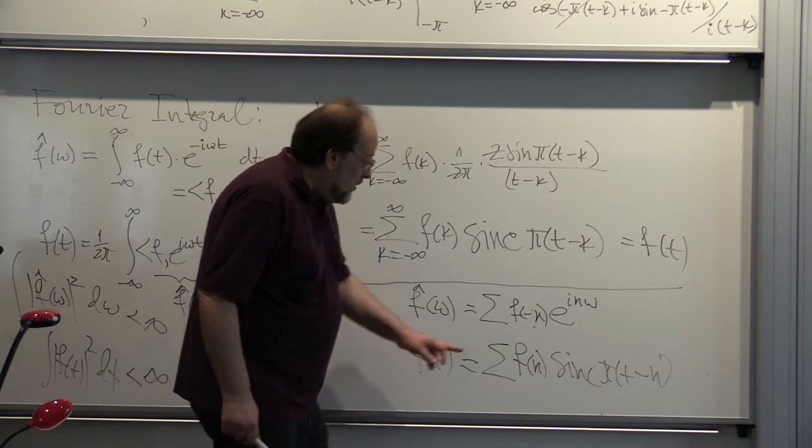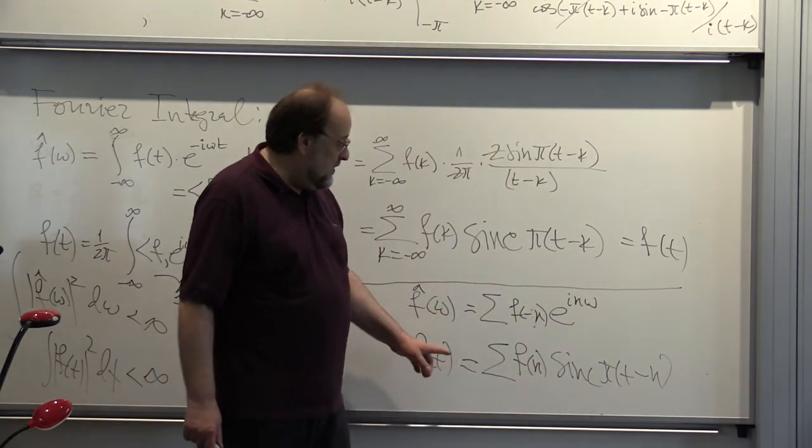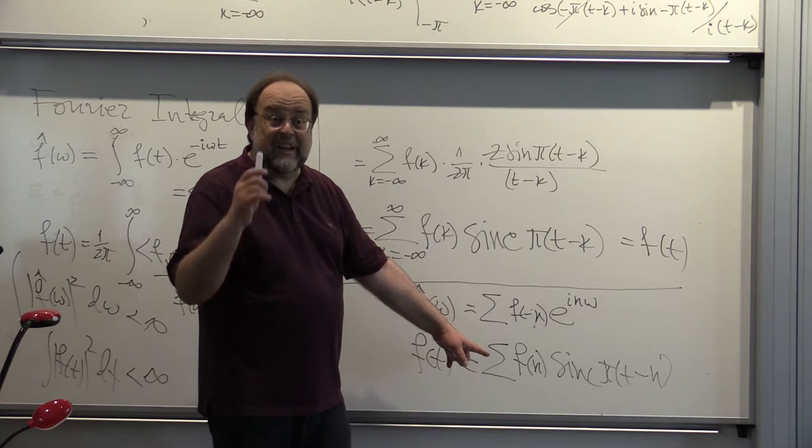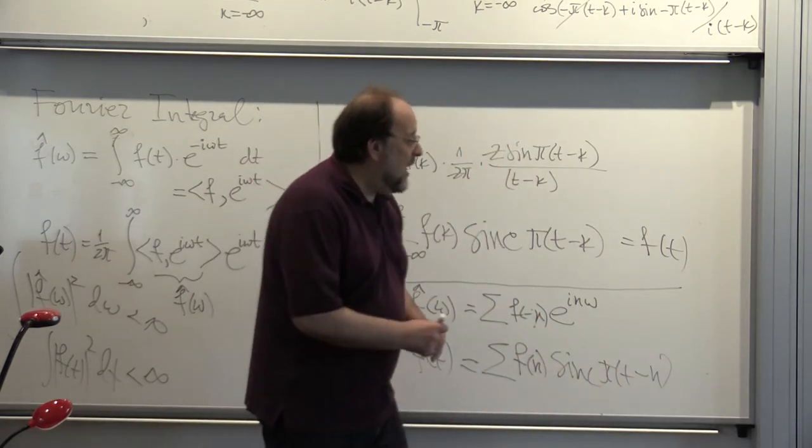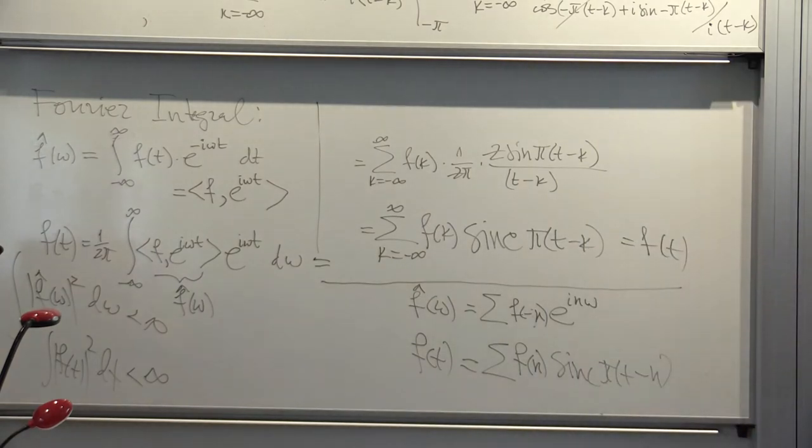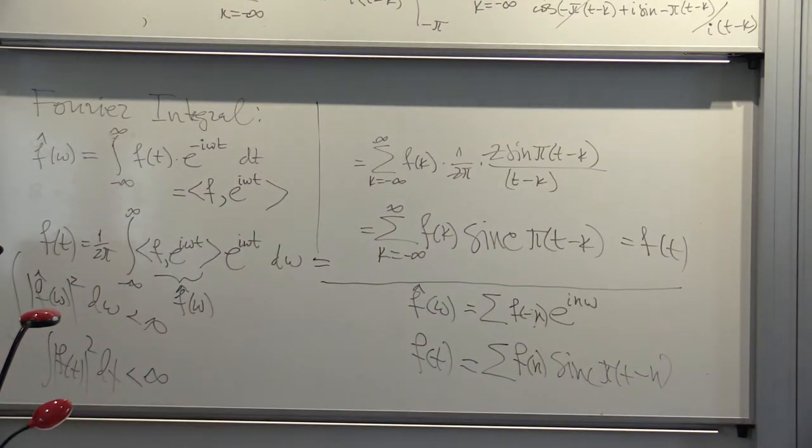In fact, these guys - this is also Fourier series, generalized Fourier series, because these guys under the regular scalar product are also orthogonal, and it's easy to see that: integral from minus infinity to infinity, sinc(πt - n) times sinc(πt - m) dt